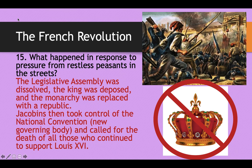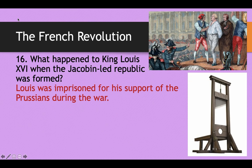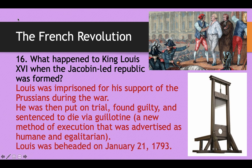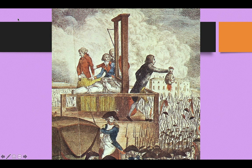The Jacobins took control of the National Convention — the new governing body — and called for the death of all those who continued to support King Louis XVI. Louis was imprisoned for his support of the Prussians during the war, put on trial, found guilty, and sentenced to die via guillotine. The guillotine was advertised as a humane and egalitarian method of execution. King Louis XVI, King of France, was beheaded by his own people on January 21st, 1793.